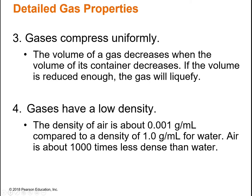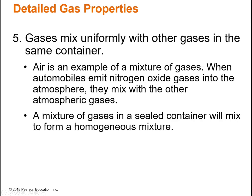The fourth property: gases have a low density. For reference, the density of air is 0.001 grams per milliliter, compared to water at 1 gram per milliliter—a big difference. This really means that all the particles are spaced really far apart. The last property is that gases mix uniformly with other gases in the same container. Air, for example, is a mixture of oxygen, nitrogen, hydrogen, carbon dioxide, and other gases, all distributed evenly.